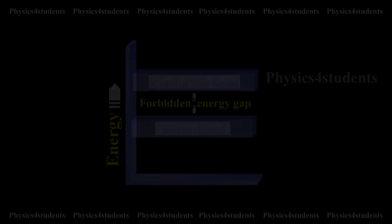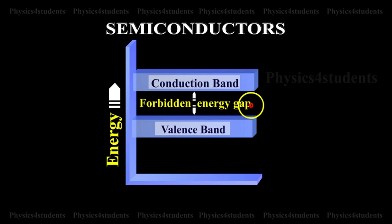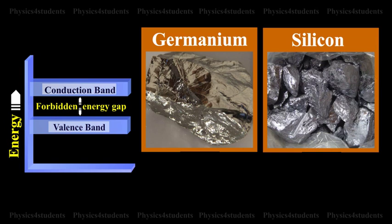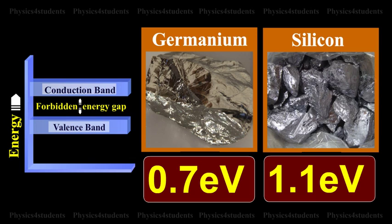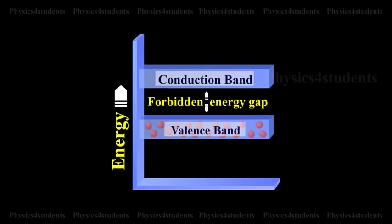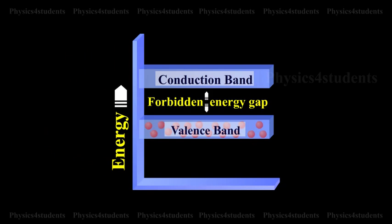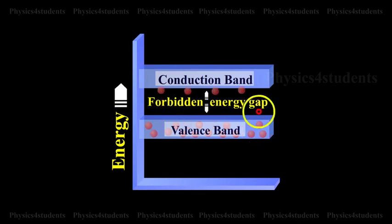In semiconductors, the forbidden gap is very small. Germanium and silicon are the best examples of semiconductors. The forbidden gap energy is of the order of 0.7 electron volts for germanium and 1.1 electron volt for silicon. There are no electrons in the conduction band and the valence band is completely filled at 0 Kelvin. With a small amount of energy supplied, the electrons can easily jump from the valence band to the conduction band.